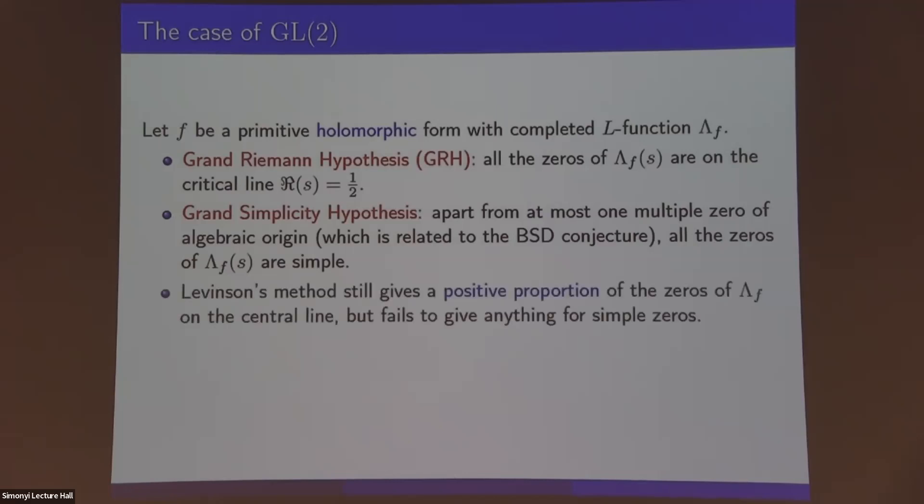Here you can run Levinson's method, which I'm not going to describe. But it turns out that it works to give a positive proportion of the zeros on the critical line. So it does give you a qualitative approximation for the Riemann hypothesis. But it turns out that it's kind of a risky method in that you have to do some numerical optimization in the end, and you might end up with a proportion which is negative, which is what happens if you try to run it for simple zeros. So it doesn't give you anything. And then the question is, what can we say about the number of simple zeros for the L-functions associated to such forms? In that direction, it's only known that a positive proportion of the zeros have order at most three. That's also using Levinson's method and further ideas due to Conrey.